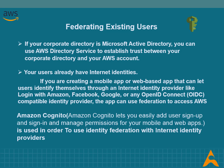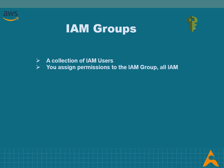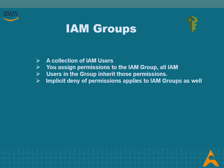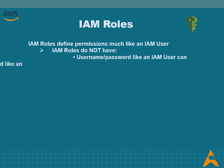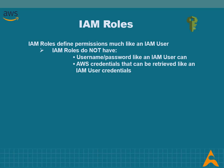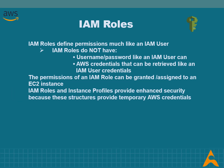If users already have internet identities, a mobile or web-based app can let users identify themselves through an internet identity provider like Login with Amazon, Facebook, Google, or any OpenID Connect compatible identity provider, and use federation to access AWS. Permissions are granted through policies in a centralized way. By default, IAM users cannot access anything in the account. IAM groups are collections of IAM users; permissions assigned to the group are inherited by all users in it. IAM roles define permissions much like an IAM user but do not have a username or password, and provide temporary AWS credentials via the EC2 metadata service.